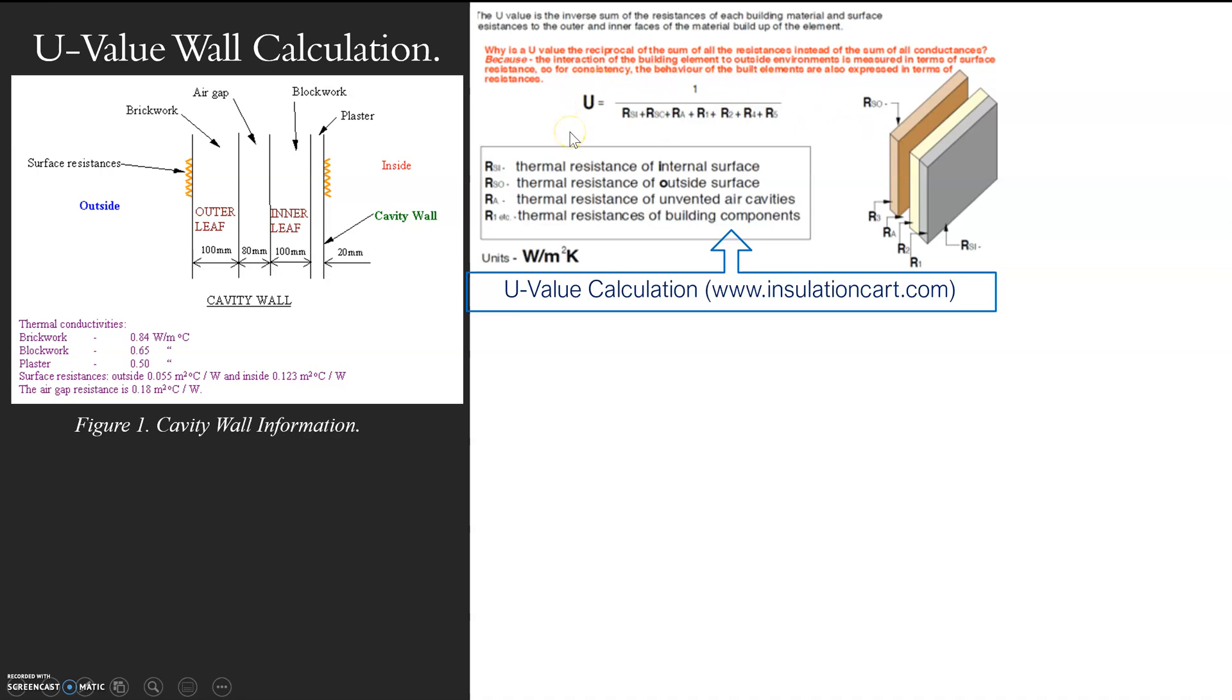U-value is basically the transmittance of allowing for how much heat goes through a material, given the depth of the material, the resistance of the material, etc. Hence the reason that we need to know the resistance of each material.